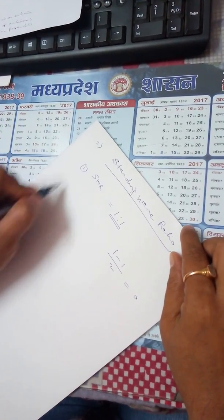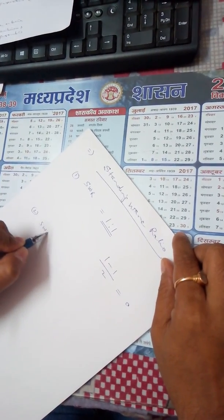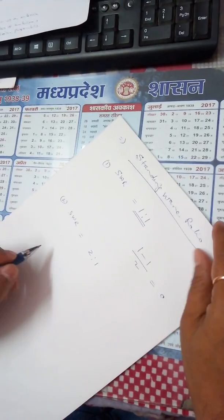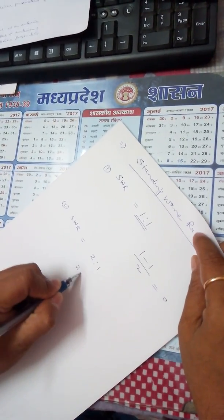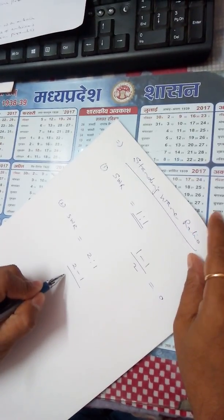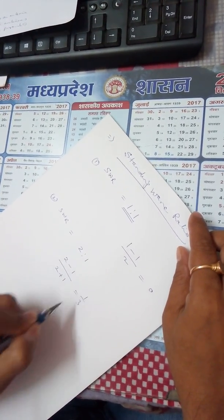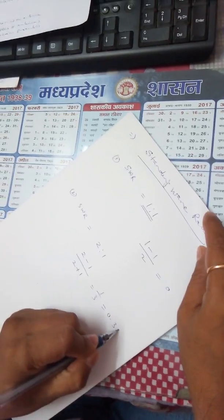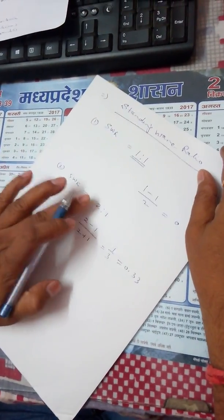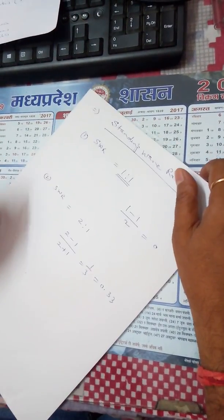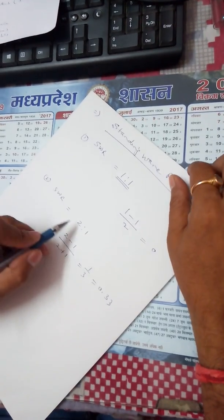But if you have SWR of 2 is to 1, so that means 2 minus 1 upon 2 plus 1, this will become 1 by 3, that means 0.33. So such type of antenna is practically available, these antennas are recognized by 2 is to 1.